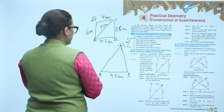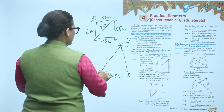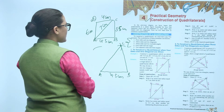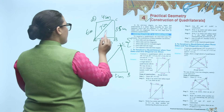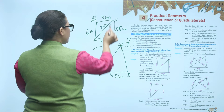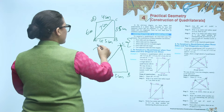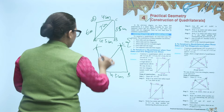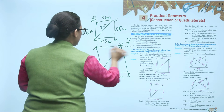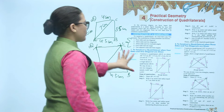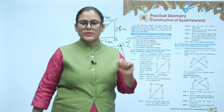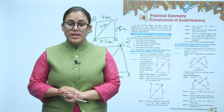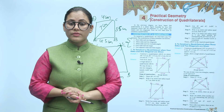Next, take A as center with radius equal to 6 cm and draw an arc of 6 cm. Then take C as center and draw an arc of 4 cm. In this way you get point D. Join the points, and your quadrilateral is drawn. Next: construct a quadrilateral when three sides and two diagonals are given.